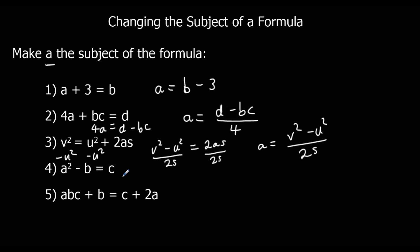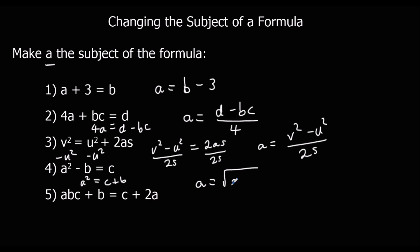For number 4, we need to plus B first to get A squared by itself. That leaves us with A squared equals C plus B. To get A by itself, we have to do the opposite of squaring, and the opposite of squaring is square rooting. So A equals the square root of C plus B.